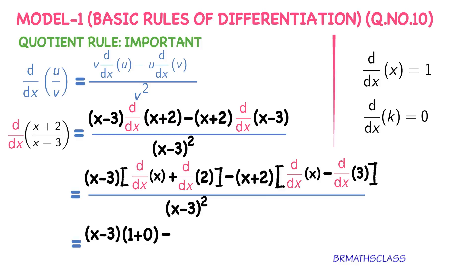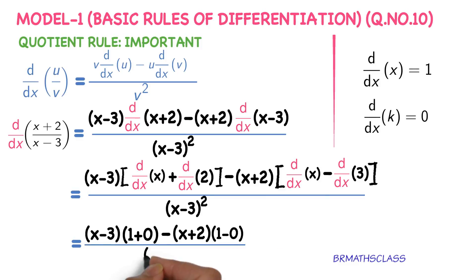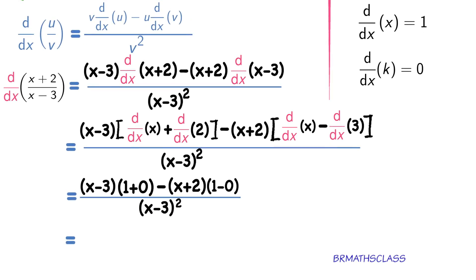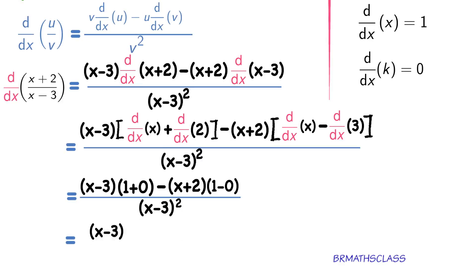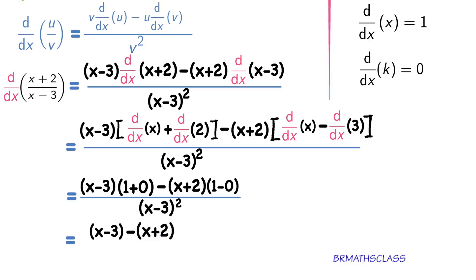Minus (x plus 2) into: the derivative of x is 1, minus the derivative of 3 is 0, whole divided by (x minus 3) whole squared. Observe the numerator: (x minus 3) into (1 plus 0) is 1, so (x minus 3) into 1 is (x minus 3). Minus (x plus 2) into (1 minus 0) is 1, so (x plus 2) into 1 is (x plus 2), whole divided by (x minus 3) whole squared.